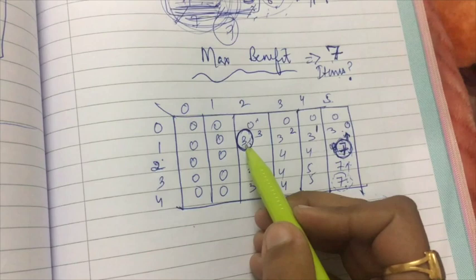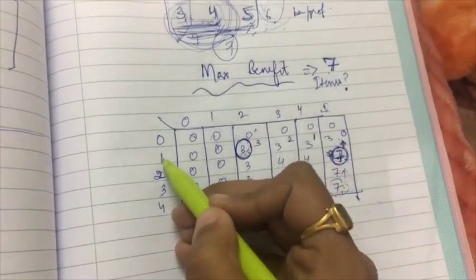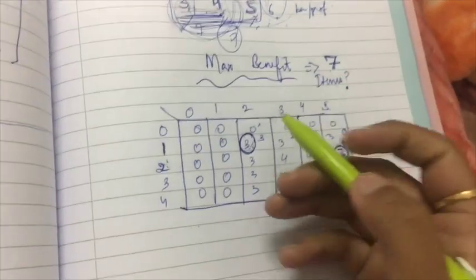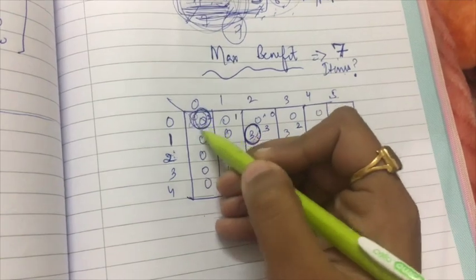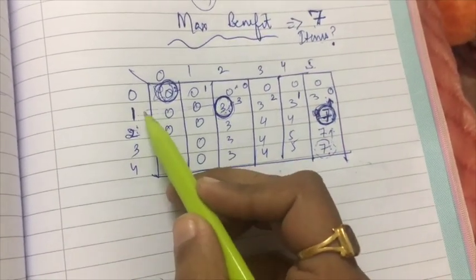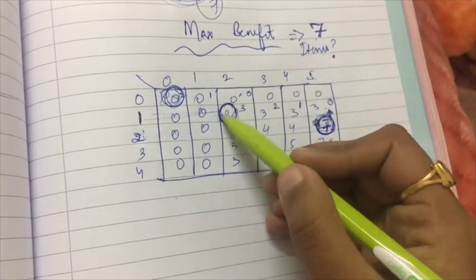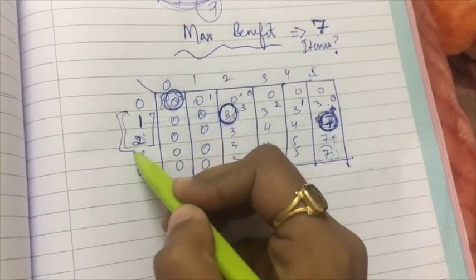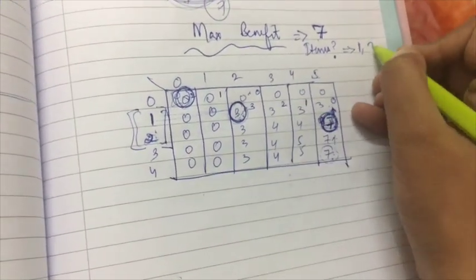Now I check that cell similarly. The item number is 1, and its corresponding weight is 2. I check if this value is the same as above — it is not, so it is generated here. I move up and shift left by 2. There is nothing further to trace. This means item one and item two were used. The maximum benefit is 7 and the items selected are item one and item two.